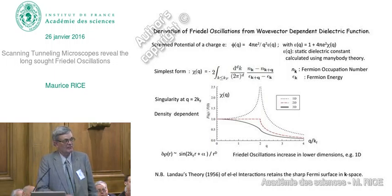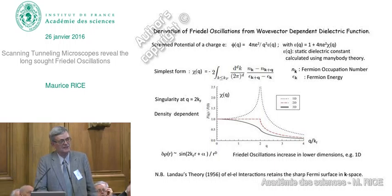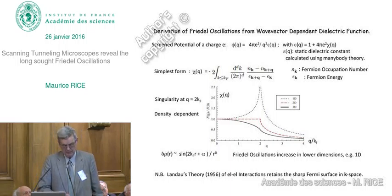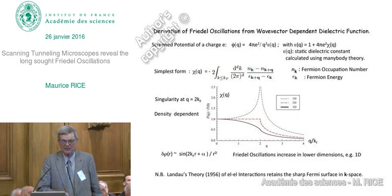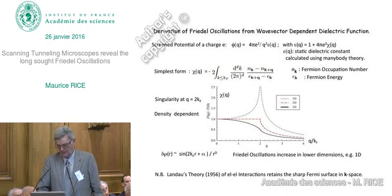One interesting remark: later in the 50s, people began to understand how to treat interactions, and a famous paper is Landau's theory of electron-electron interactions. A key result is that the Fermi surface remains sharp. In a non-interacting system, the Fermi occupation number jumps from one to zero. With interactions, it still has a discontinuity at the same place in K-space, but the magnitude has changed. The existence of this discontinuity shows that Friedel oscillations are not just a characteristic of non-interacting electrons.